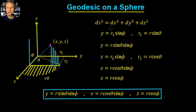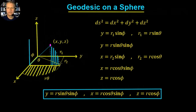Any small infinitesimal distance on the surface of the sphere is going to be given by dx² + dy² + dz². What we're interested in is equating these to the angles phi, theta, and the length r. So let's go ahead and do that.